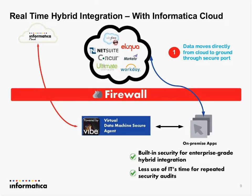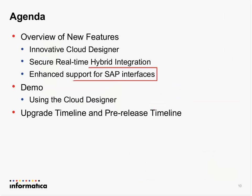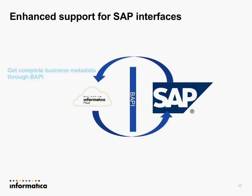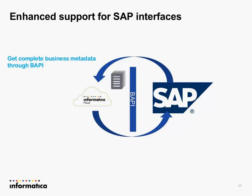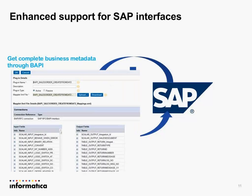When you're engaging in enterprise-grade integration scenarios between a cloud application such as Salesforce and an on-premise app such as SAP or Oracle eBusiness, you don't have to worry about the security aspects because it's all taken care of, especially when performing real-time integration. That means you don't have to use up as much time of your IT security department to do a full-scale audit. We're also introducing enhanced support for SAP interfaces — we've had native SAP connectivity in the cloud for a while, and with this release we're enabling you to get your complete business metadata through SAP's BAPI interface, giving you a lot more information about SAP objects than through the WSDL alone.